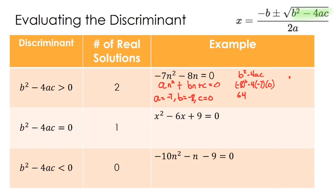That's how we get the two solutions from the plus or minus. Now let's look at our second example. For this one, it looks like our a value is 1, our b value is negative 6, and our c value is 9. So if I'm investigating my discriminant, we do b squared minus 4ac.